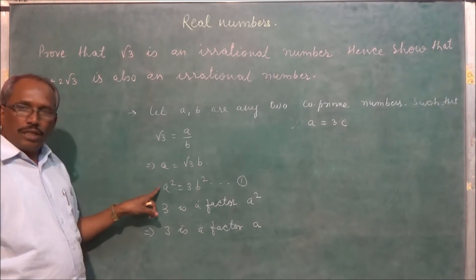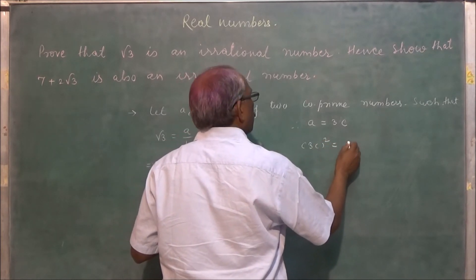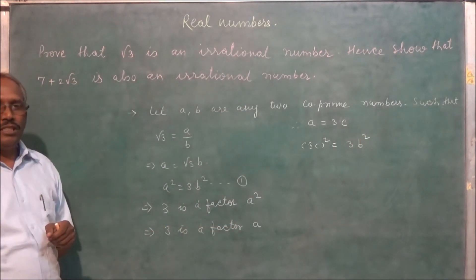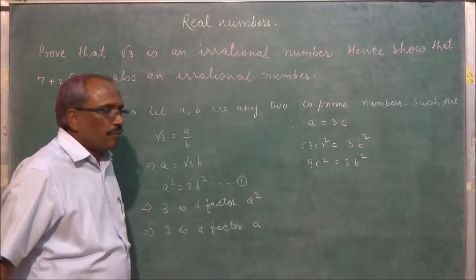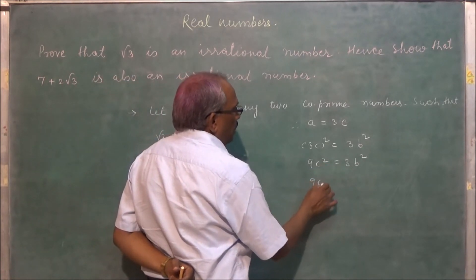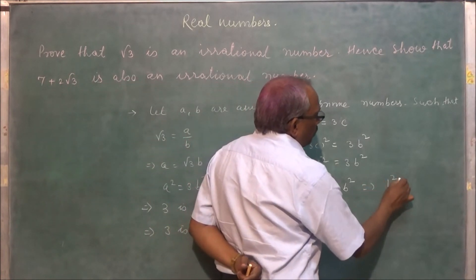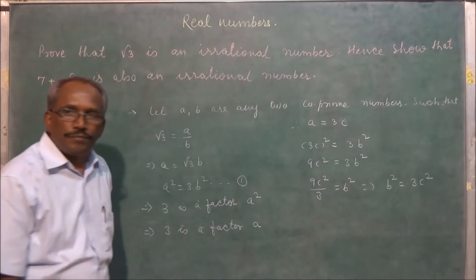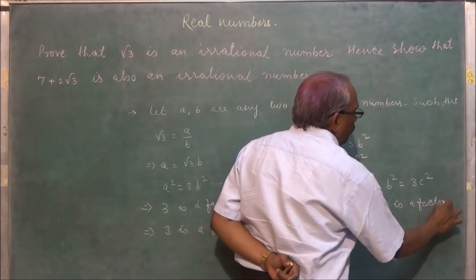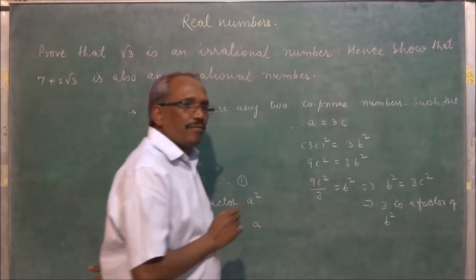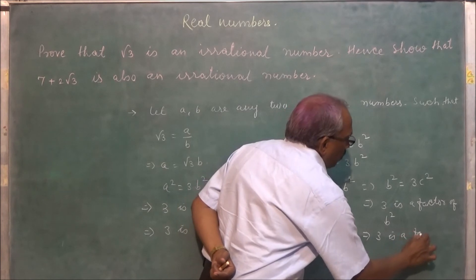So let us put a equal to 3c into the equation a squared equal to 3b squared. This gives 9c squared equals 3b squared, so b squared equals 3c squared. This implies 3 is a factor of b squared. If 3 is a factor of b squared, this implies 3 is a factor of b.